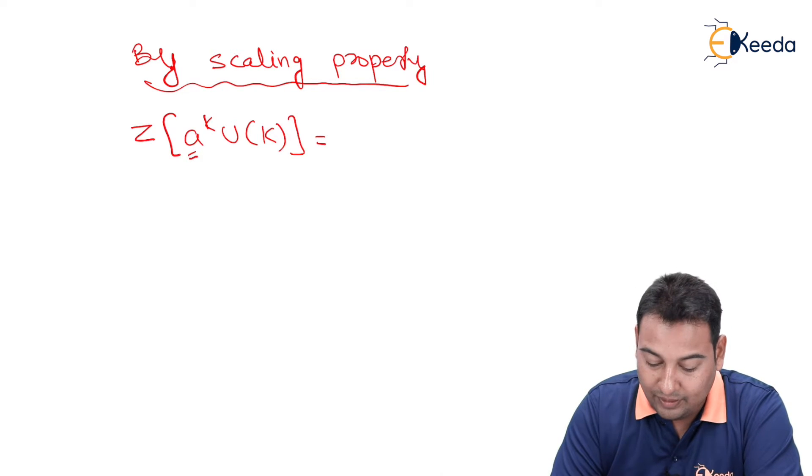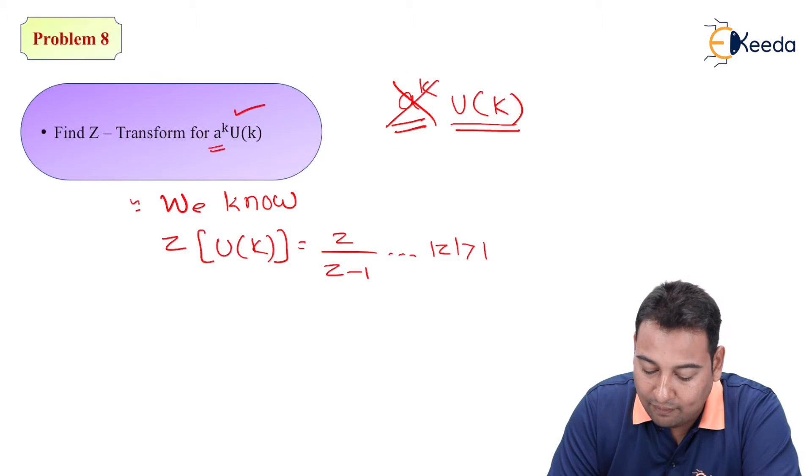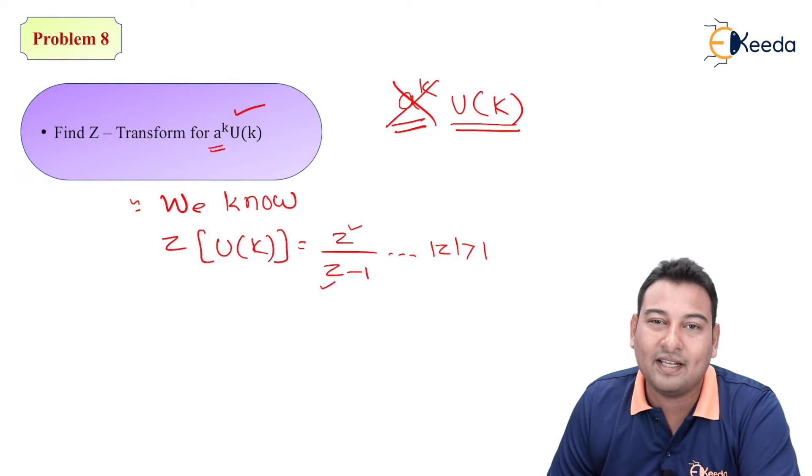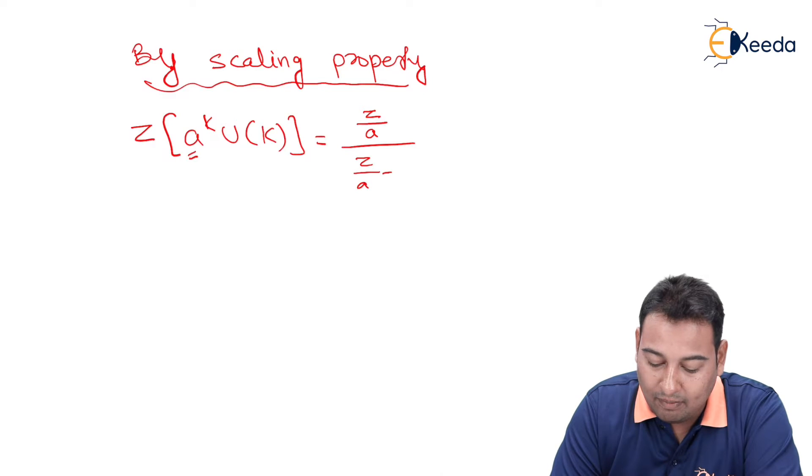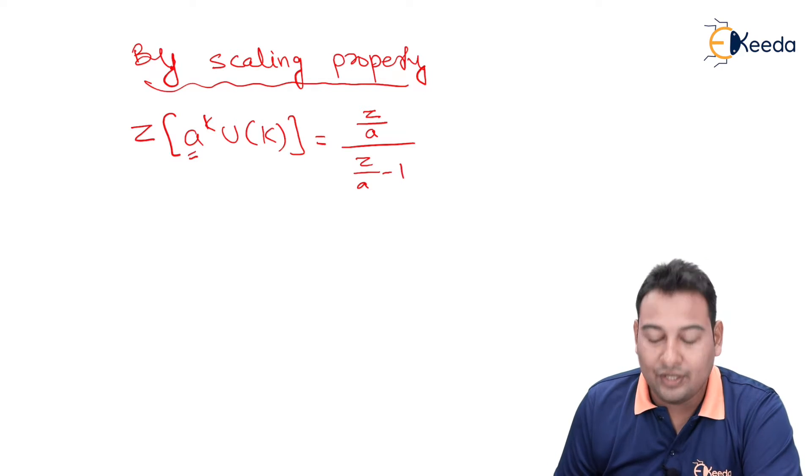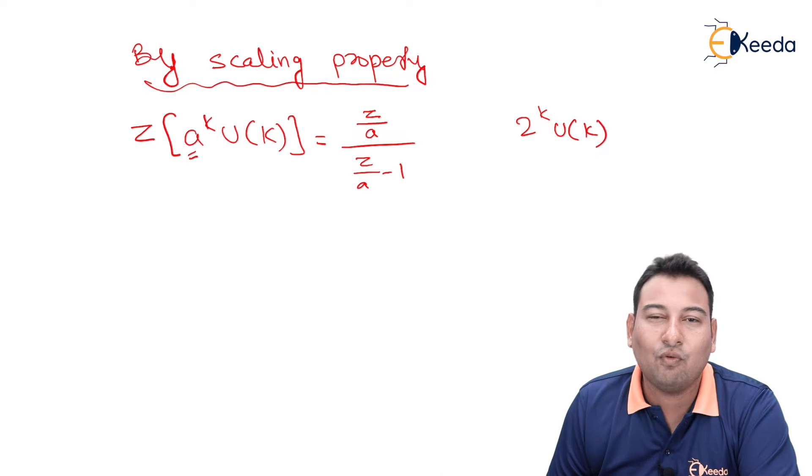What the property says: f of z by a - you need to divide with a. So z will be replaced by z by a, basically. So here we do have this z will be replaced by z by a, and this z will be replaced by z by a. So this is z by a minus 1. Suppose a it would be 2 raise to k into u(k), then what you have done: u(k) is z upon z minus 1, and due to this 2 raise to k, z will be replaced by z by 2.